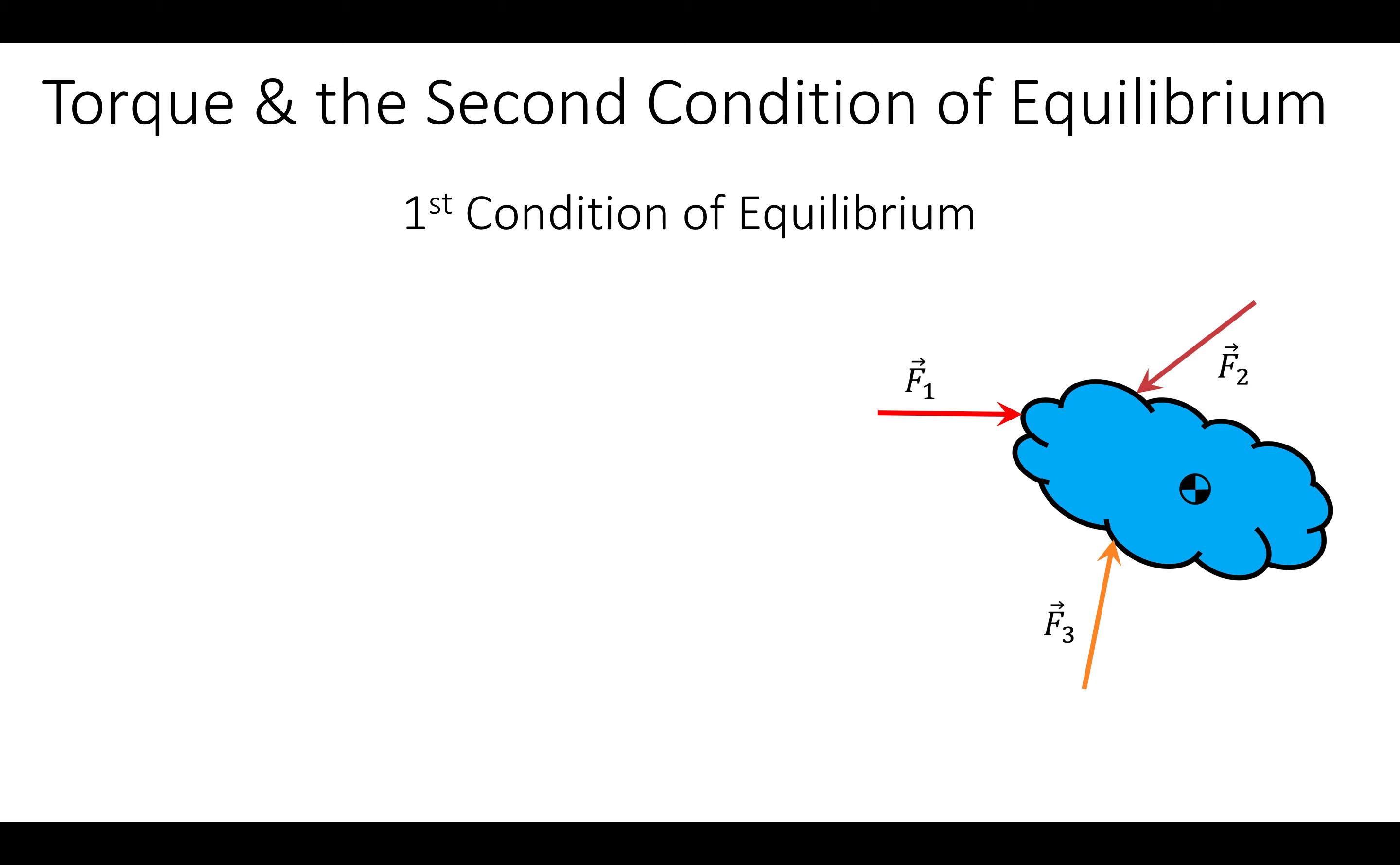Equilibrium for us is an object sitting still. Equilibrium can also be an object moving at a constant speed in a straight line. But for now, let's deal with the first. Two conditions must be satisfied for an object to be in equilibrium when we know the forces acting on it.